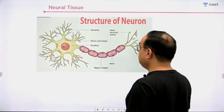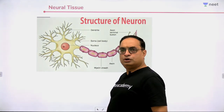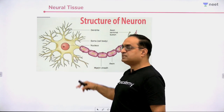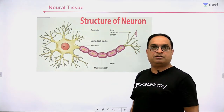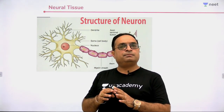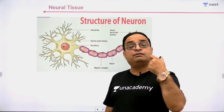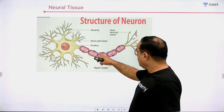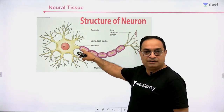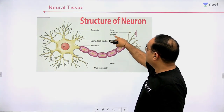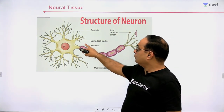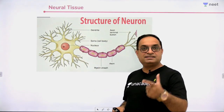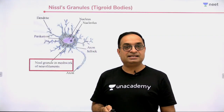Let's look at the structure of a neuron. Here you can see a typical multipolar neuron. The extensions coming out of the cell body are called dendrites — they can be numerous. A neuron can form synapses with many other neurons. This long extension is called the axon, and these are the terminal endings — the axon terminal buttons. The cell body is also called the soma, and it has a nucleus.